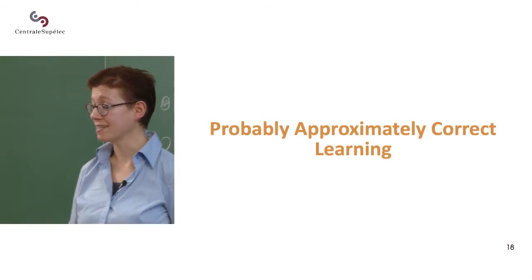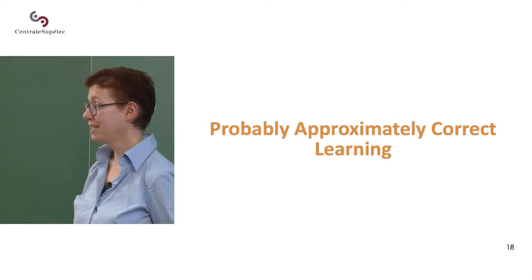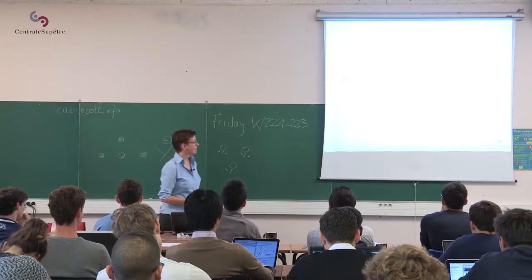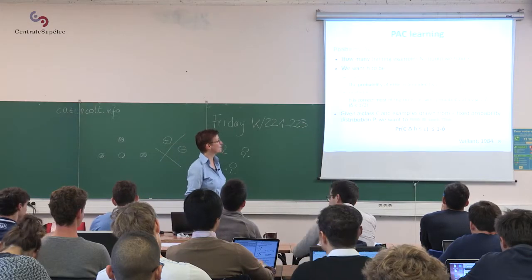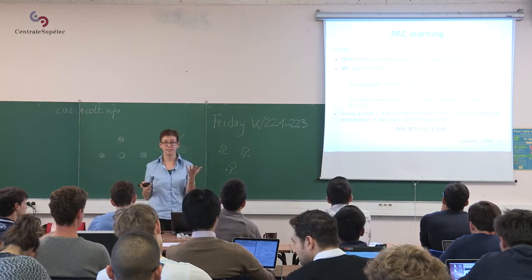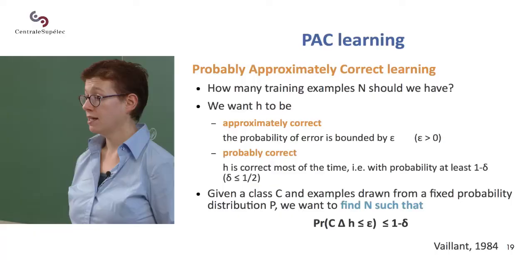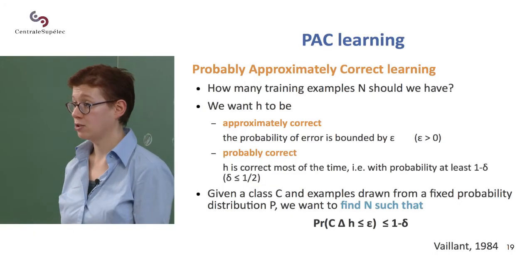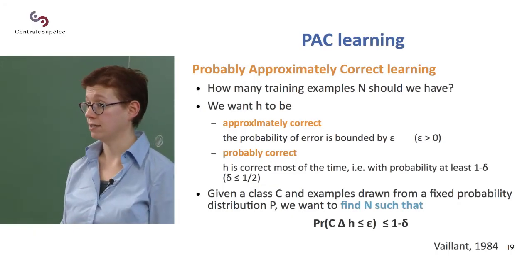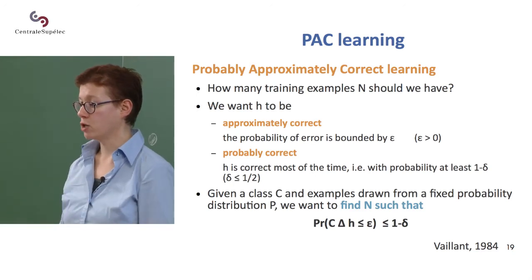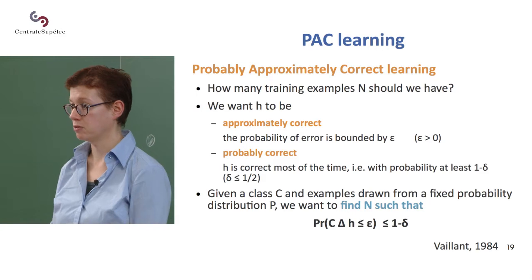So in this sentence probably and approximately both mean things and not just that we're being very cautious. So the question we already were asking with the VC dimension is how many training examples do we need to have in order to learn a good function and conversely what can we hope to learn given our number of training examples.